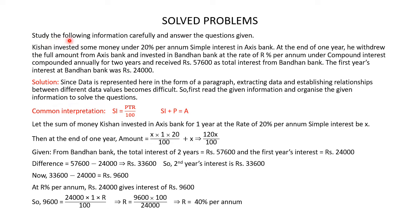Study the following information carefully and answer the questions given. Kishan invested some money under 20% per annum simple interest in Axis Bank. At the end of one year, he withdrew the full amount from Axis Bank and invested in Bandhan Bank at the rate of R% per annum under compound interest, compounded annually for 2 years, and received Rs 57,600 as total interest from Bandhan Bank. The first year's interest at Bandhan Bank was Rs 24,000. Based on all the information given in this caselet, you have to answer the given questions.